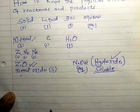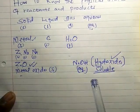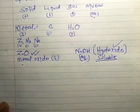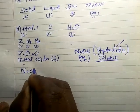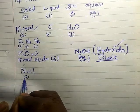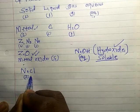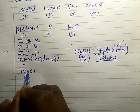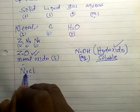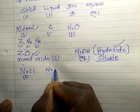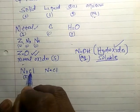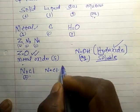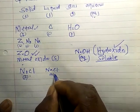For gases, it is simple — if you know something is a gas, it should be indicated as G. Now there are compounds like sodium chloride, which is a solid — the one we use at home for food. But if you are told a solution of sodium chloride, because sodium chloride is soluble in water, then it should be aqueous.